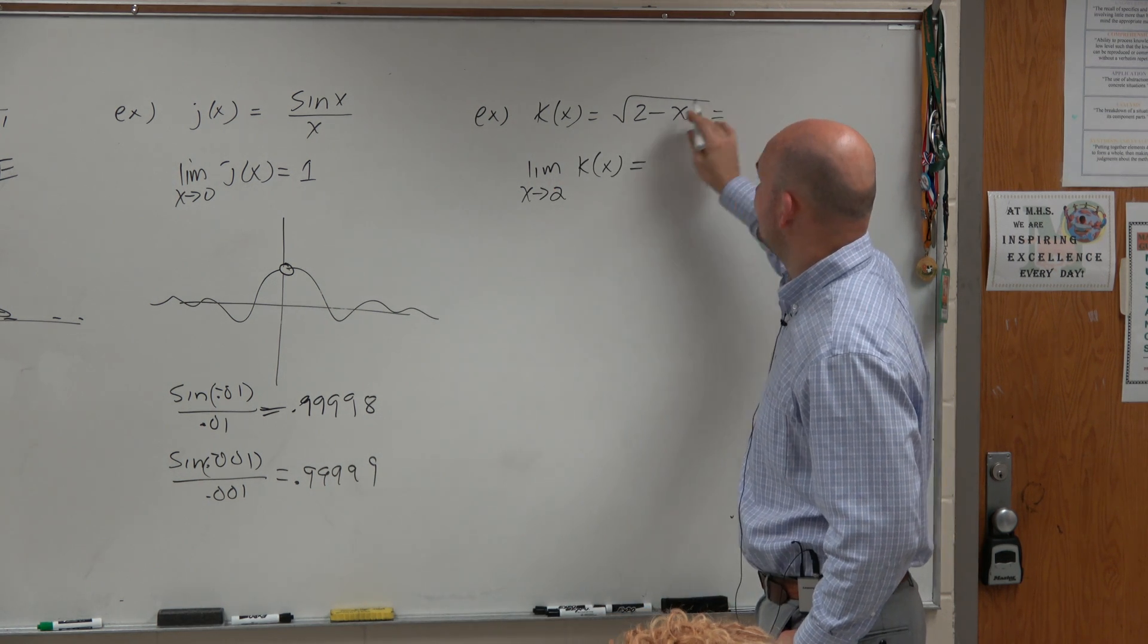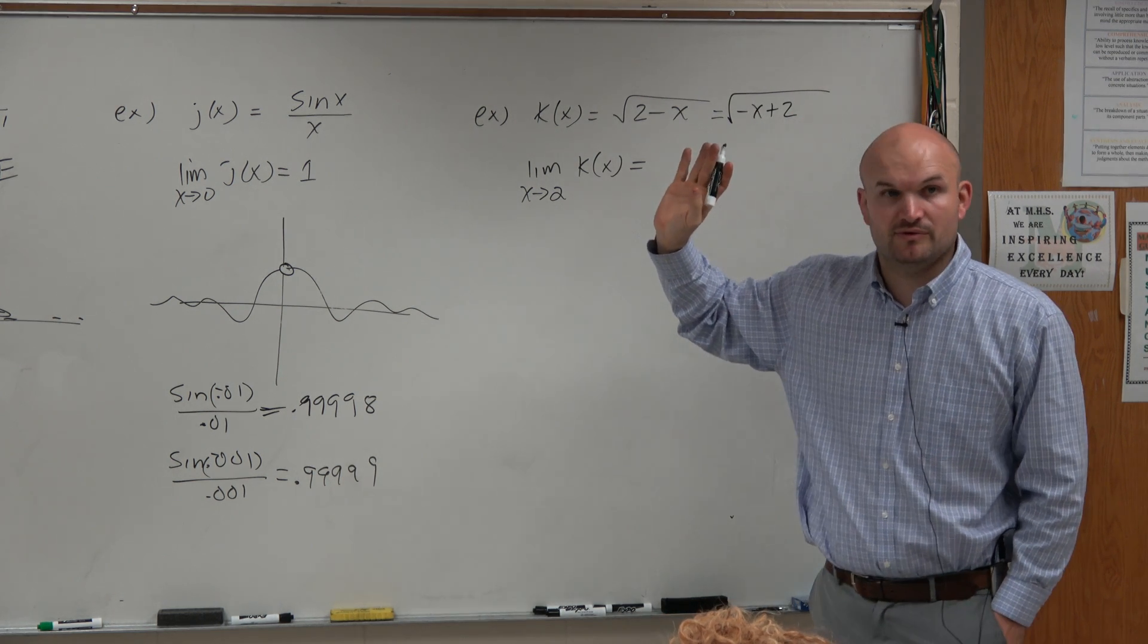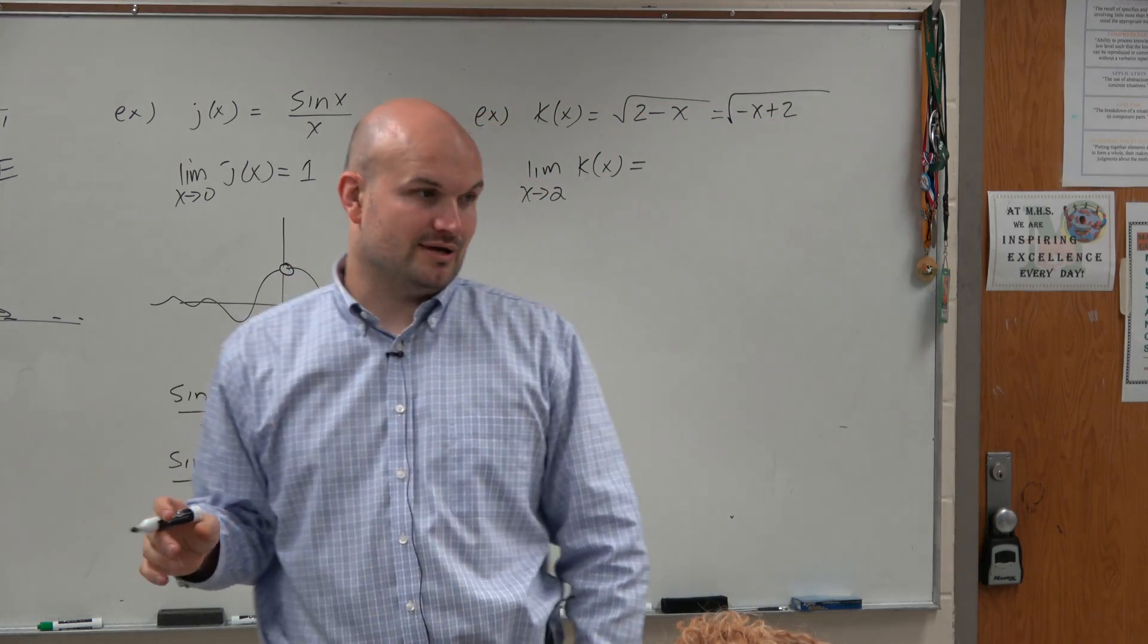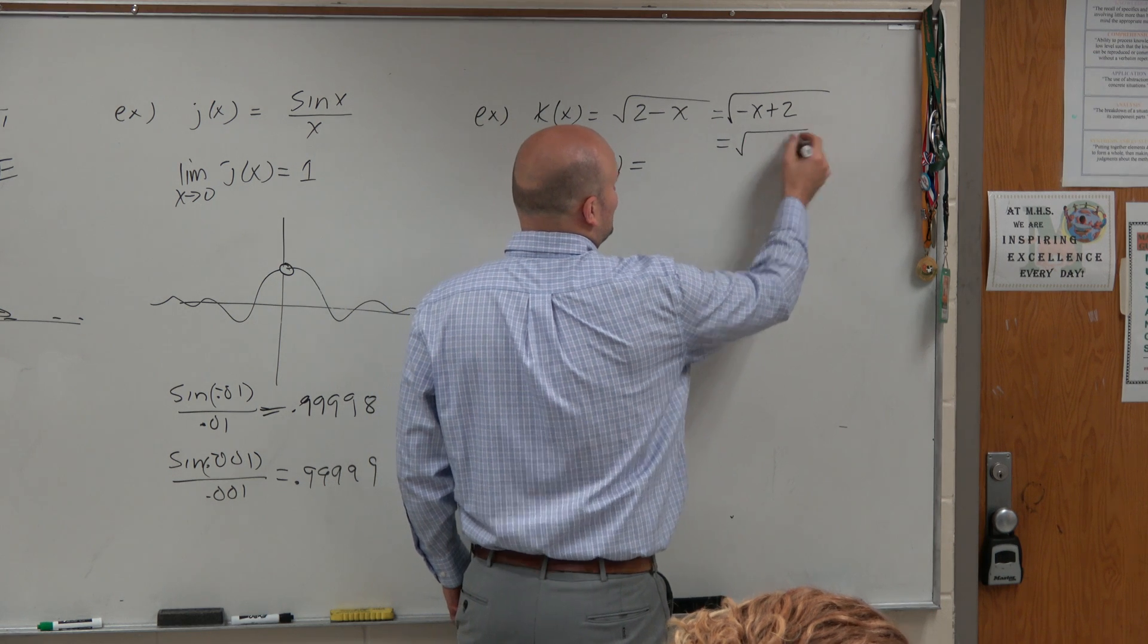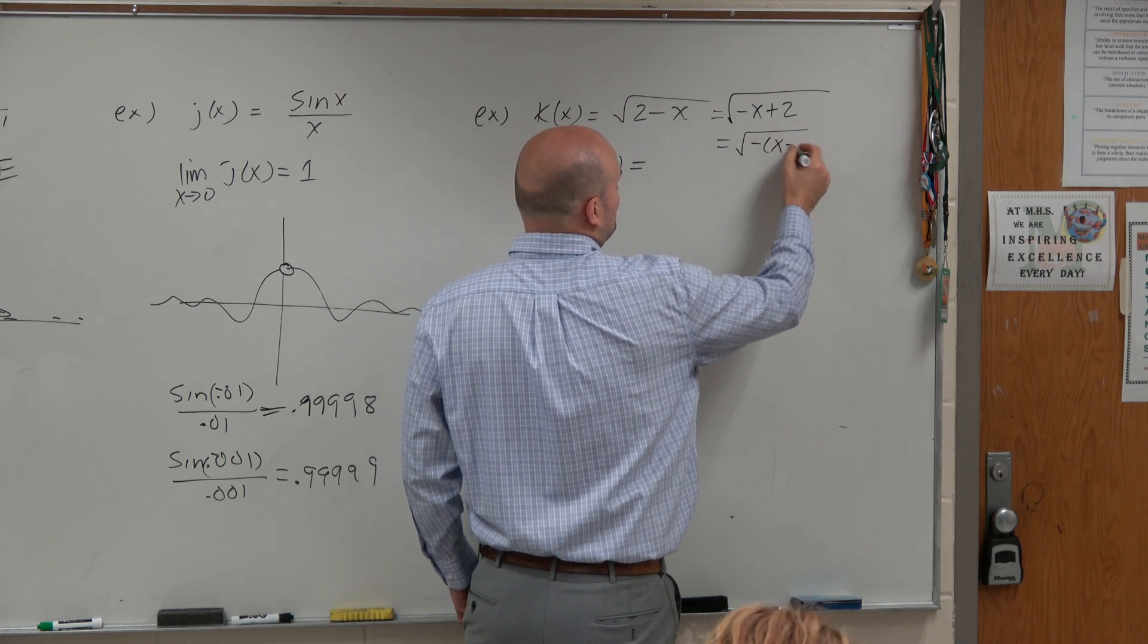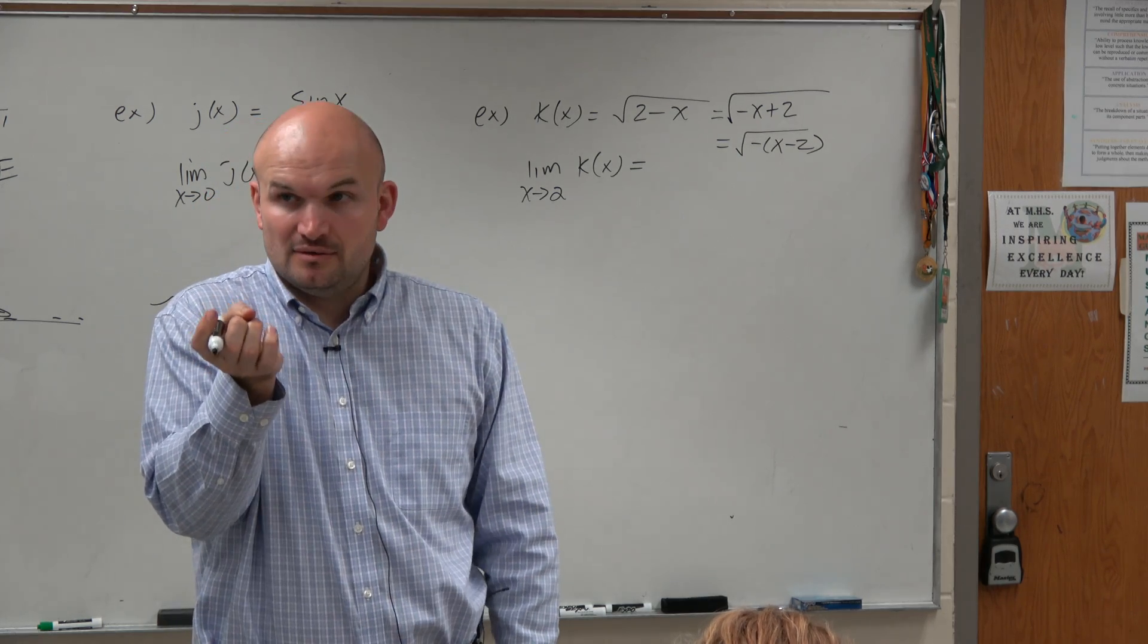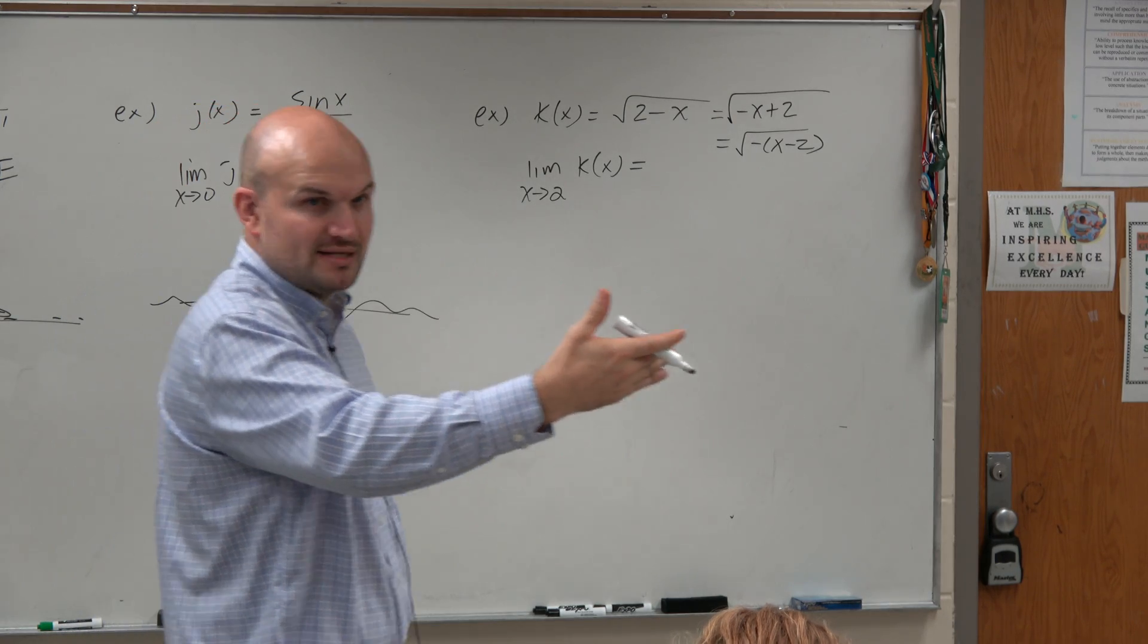Now remember, I could rewrite this as negative x plus 2. Is everybody OK with me rewriting, switching the x's and the 2? Then I could factor out a negative. So therefore, I know I have a negative b, which is reflecting about my y-axis, and I'm shifting the graph two units to the right.